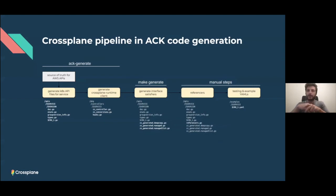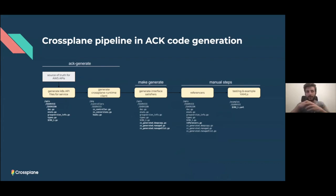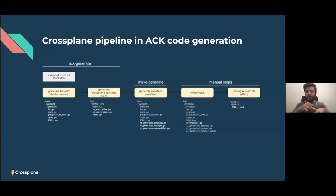In the Crossplane AWS provider, we actually reuse a lot of stuff between controllers and it's all in one deployment. So where we needed the ACK generate command was at the points where we interact with the AWS API. Those are: the API files, which are the translation of fields from the AWS SDK into Go structs — which are then used for generation of the CRDs — and fulfilling the Crossplane runtime external client implementation. Every controller fulfills four main functions: create, observe, delete, and update. As long as those are in place and working, we get a full controller. We leverage that and use ACK generate's templates for fulfilling those functions.